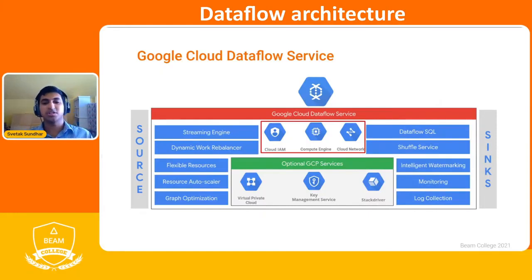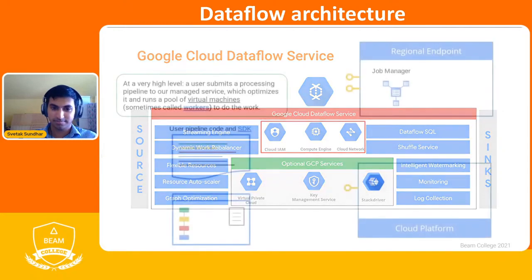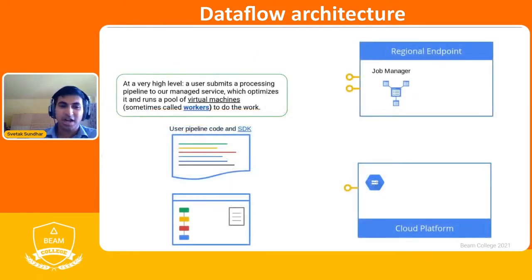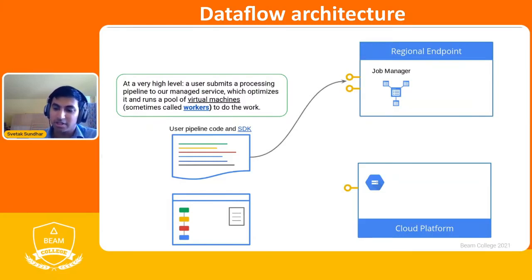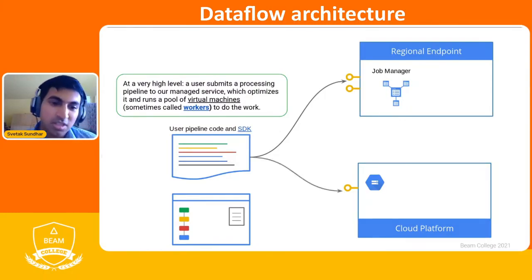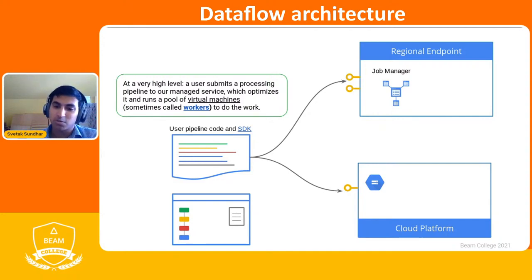Now I want to get into some integrations with other GCP services — specifically Cloud IAM, Compute Engine, and Cloud Networking. At a high level, you have your Beam pipeline that you've written, and you submit it to what we call a regional endpoint. The regional endpoint acts as your primary worker — it's not executing the work, but it handles resource provisioning. At the same time, your pipeline code is sent to Google Cloud Storage, which holds common resources that the workers actually executing your work will need to access.